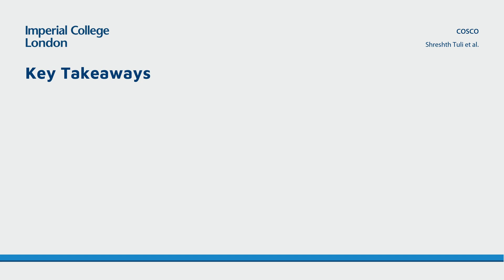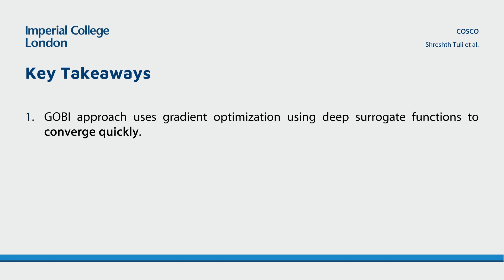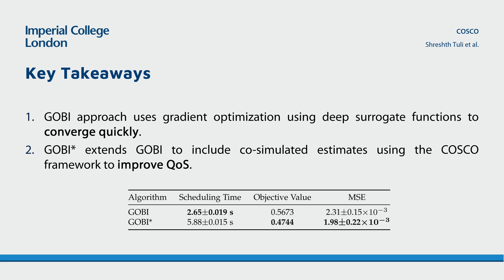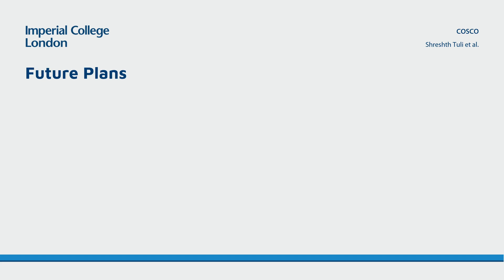To recap, this work proposed a novel scheduler GOBI, based on gradient optimization using neural networks as a surrogate function. We then extend GOBI to add co-simulated QoS estimates to further improve objective scores, calling this GOBI*. Comparing GOBI and GOBI* against state-of-the-art schedulers using real-world fog applications, our methods reduce energy consumption, response time, SLA violation, and scheduling time. Between the two, GOBI* gives better QoS values, however GOBI is more suitable for resource-constrained servers.